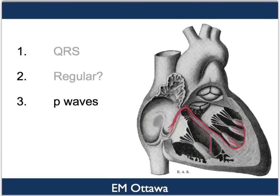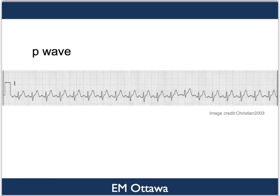Third, are there P waves? P waves, as you know, denote sinus activity. Any sinus rhythm should have P waves. Sometimes, if the rhythm is very fast, they are hard to see. Most of the time you should be able to see P waves in front of the QRS complexes, as shown on this rhythm strip.